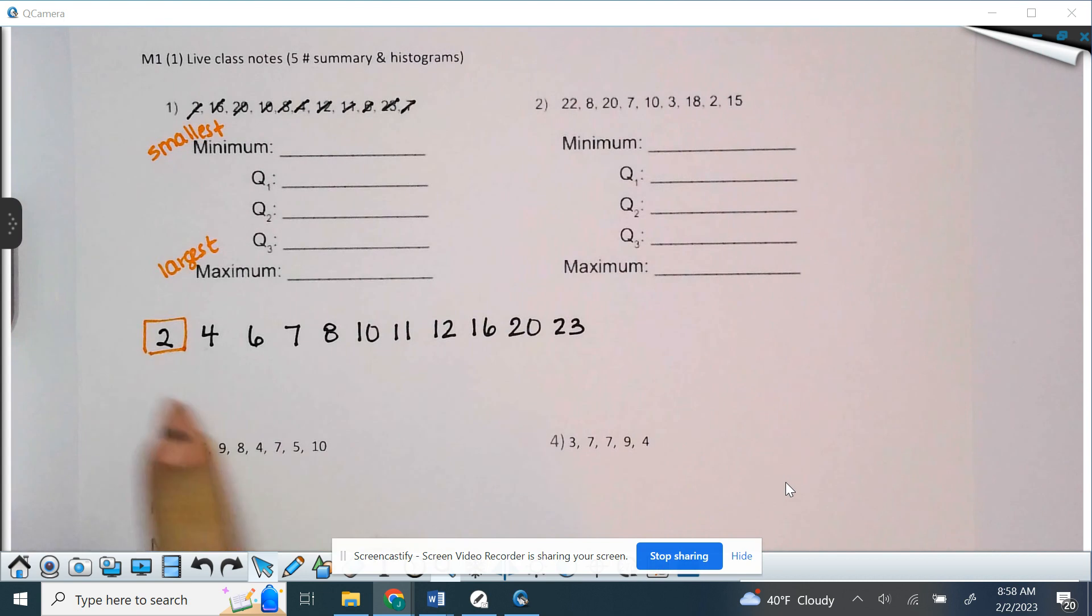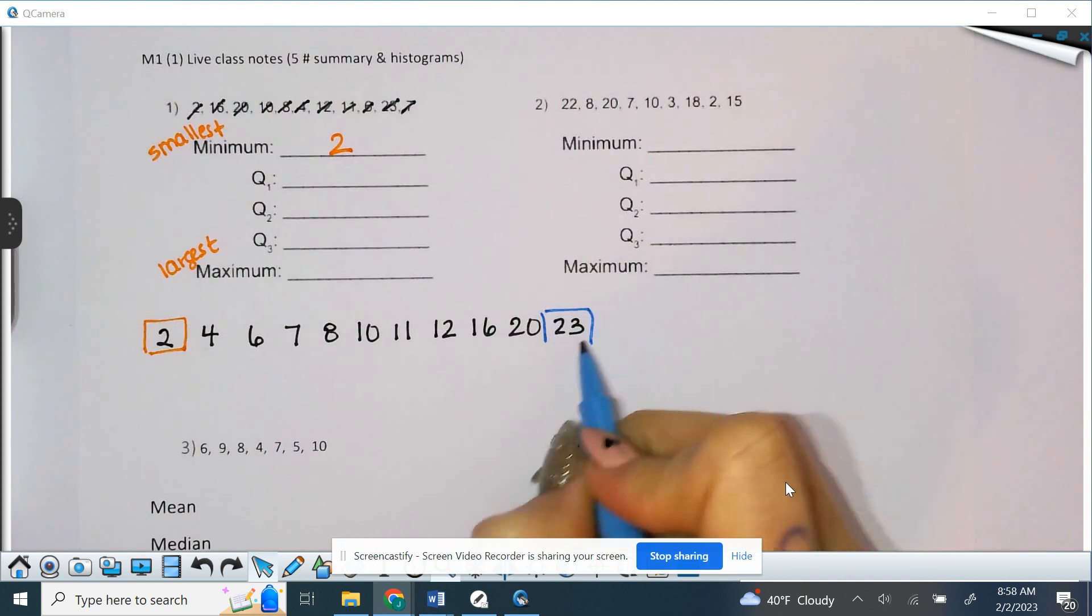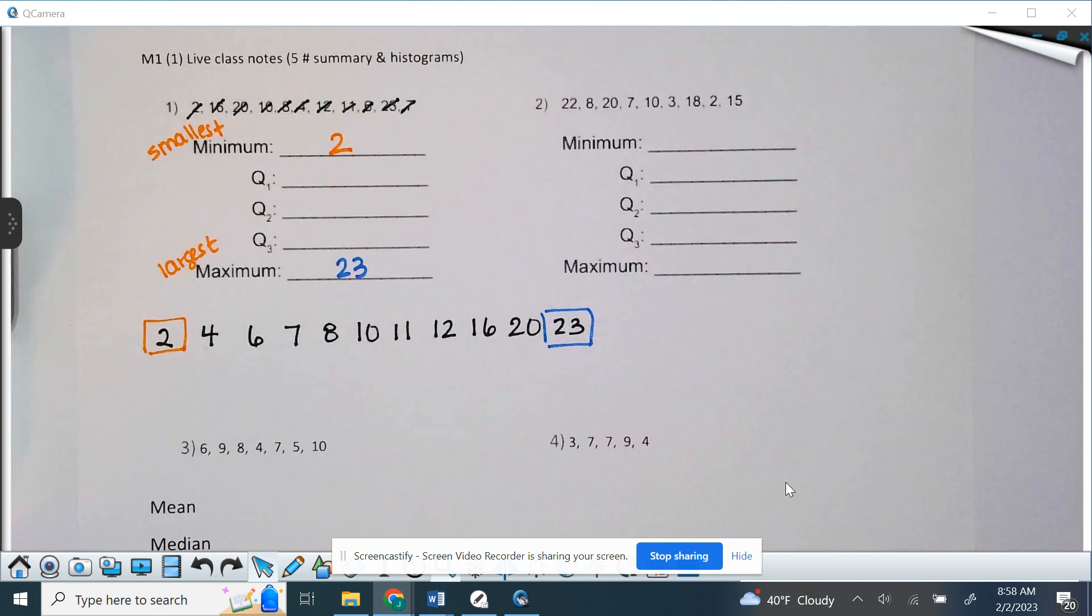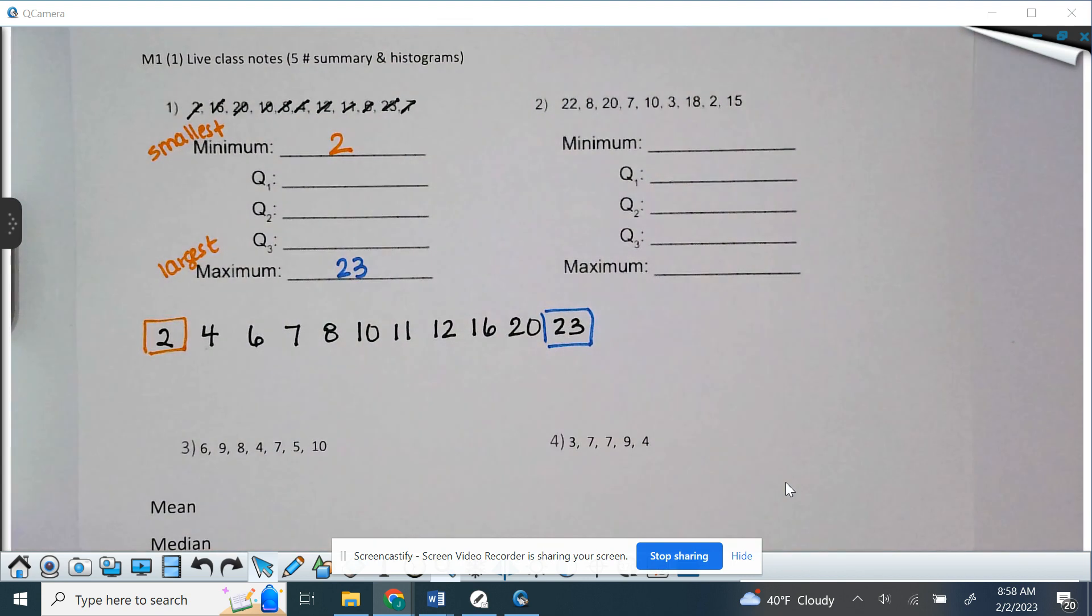So, our smallest number is going to be two. So, that's our minimum. Our largest number is going to be your maximum. That's 23. And then, our Q1, Q2, and Q3. Right now, we're just doing five numbers summary. Q1, Q2, and Q3 are going to be more applicable to Box and Whiskers, which we'll do tomorrow.